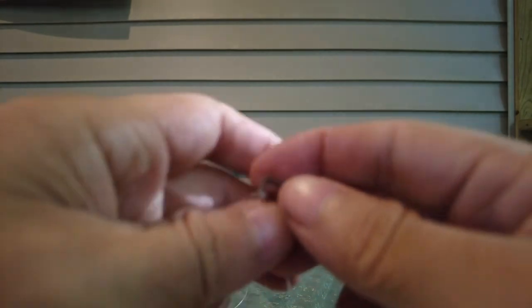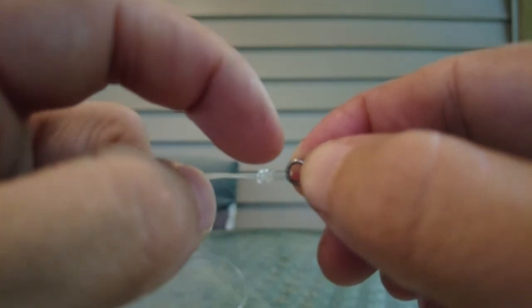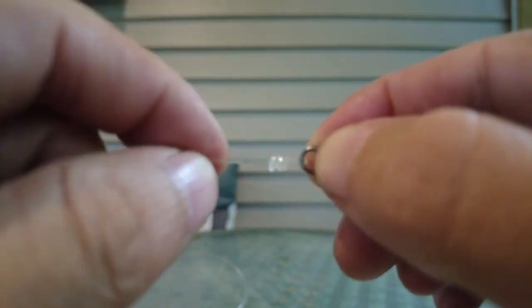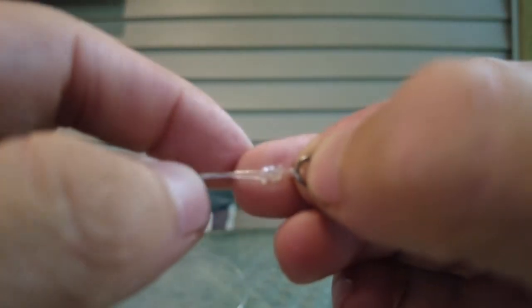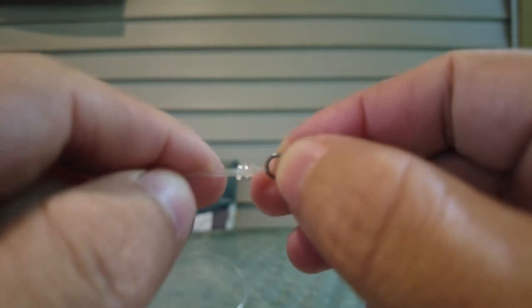There, done. Alright, you know you did it right if you can see the three loops that we created earlier. See, it wraps around three times. One, two, three. That's how you know you tied it right. And it's good. And that's it.